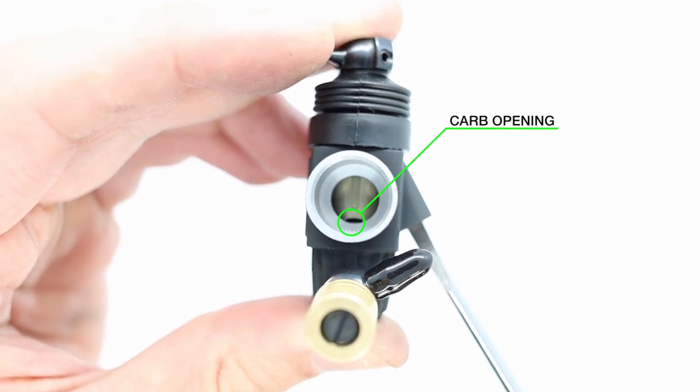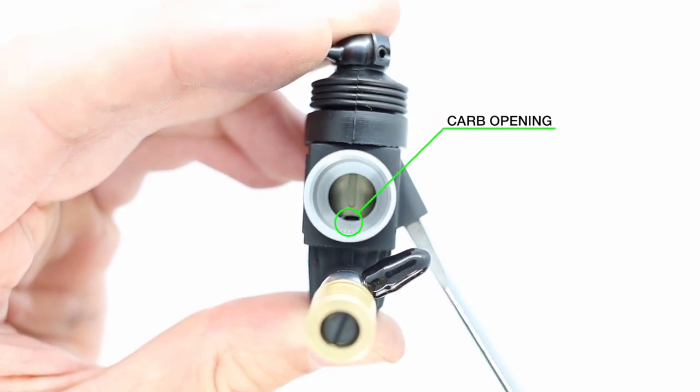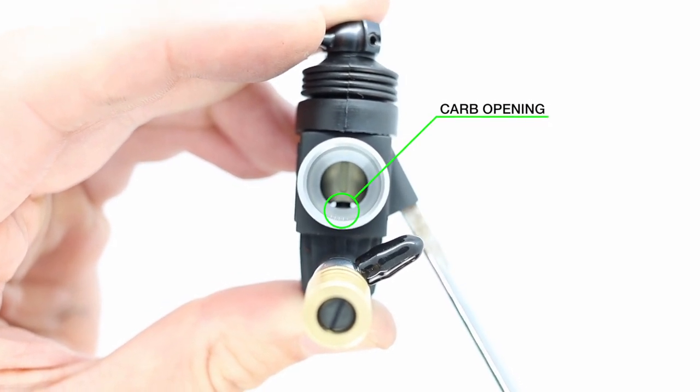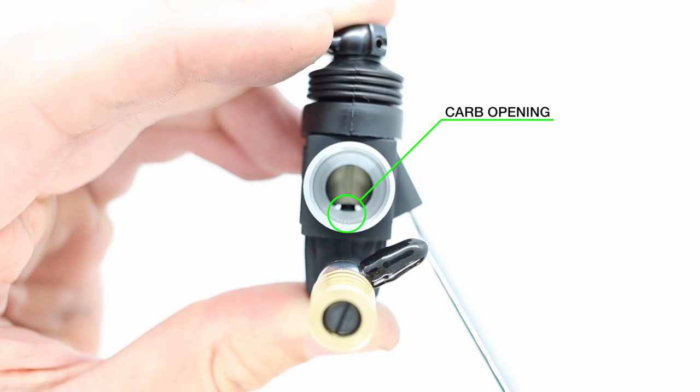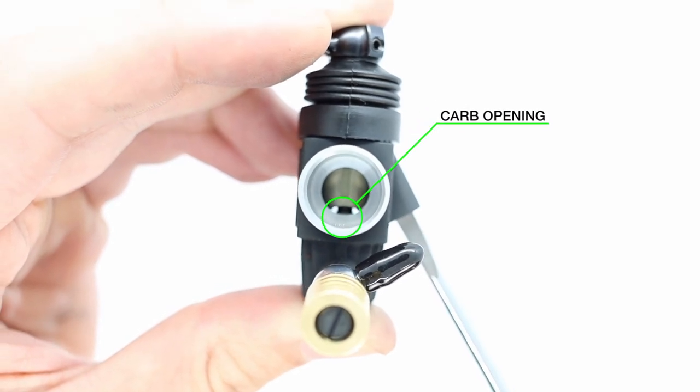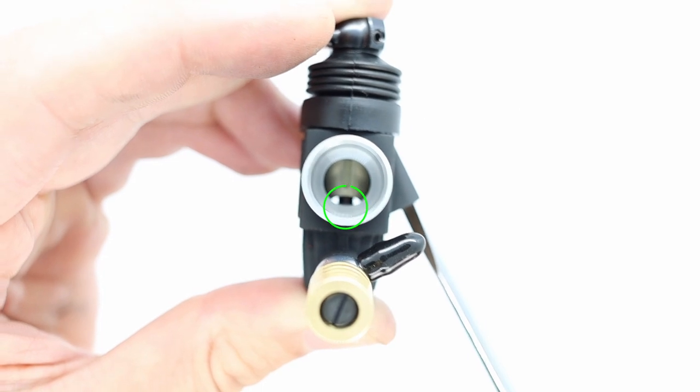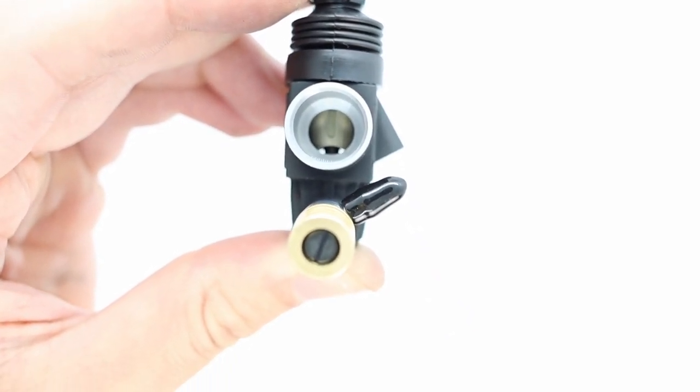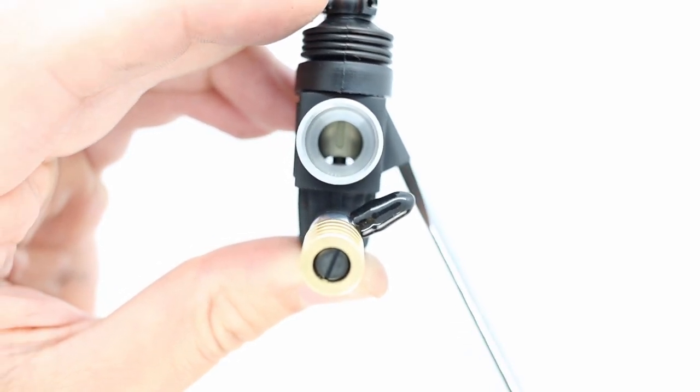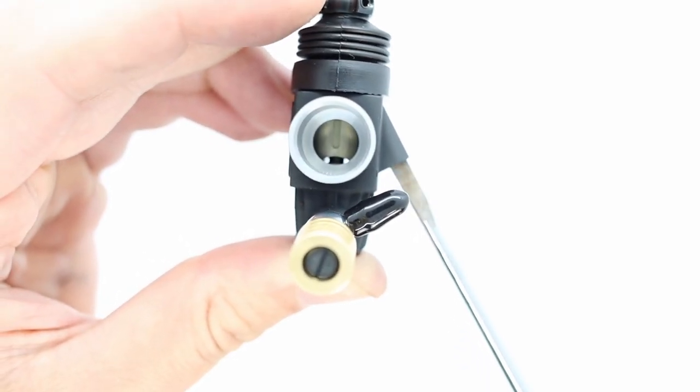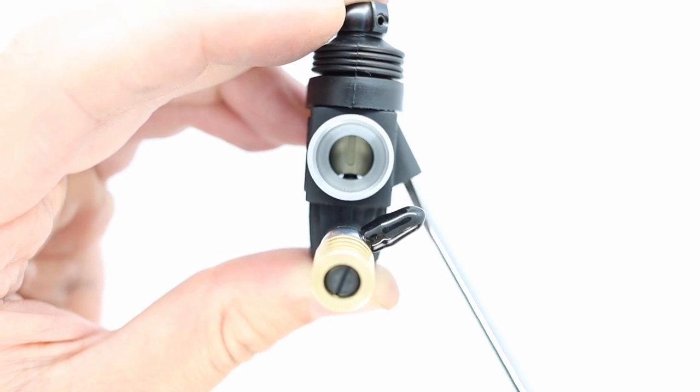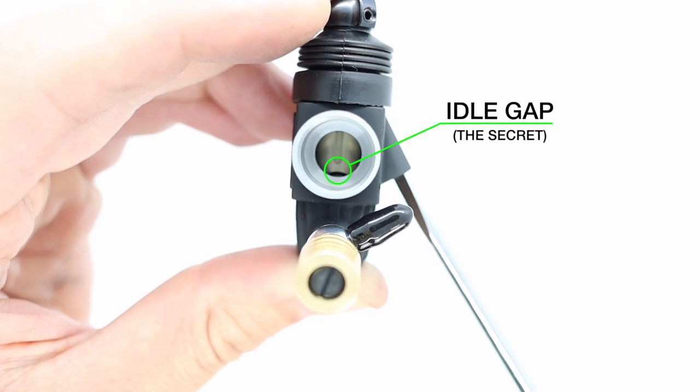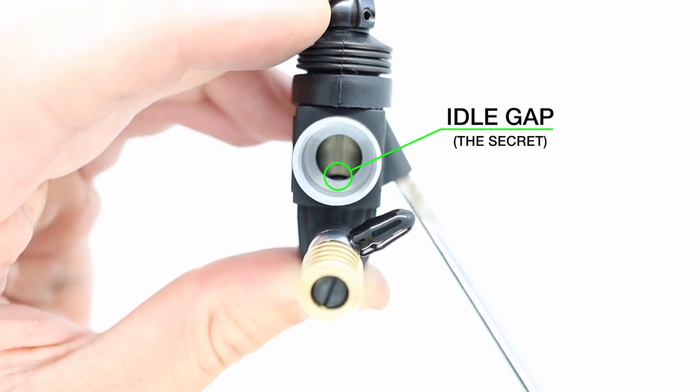Now the carb is at idle. So when I tighten the idle stop screw, it moves the barrel out and you see that gap is growing. So now the gap is quite big. Loosen the screw, it closes this gap. Now this gap is referred to as the idle gap. And this is the secret. The idle gap is the secret.